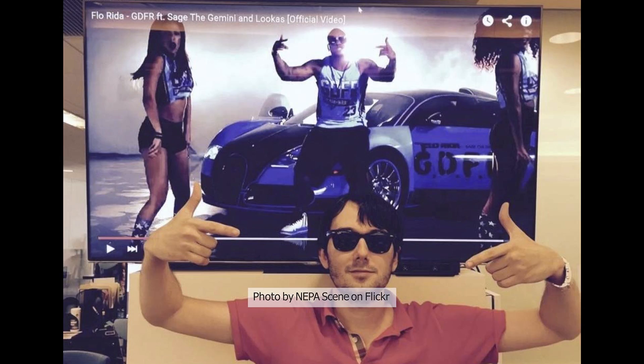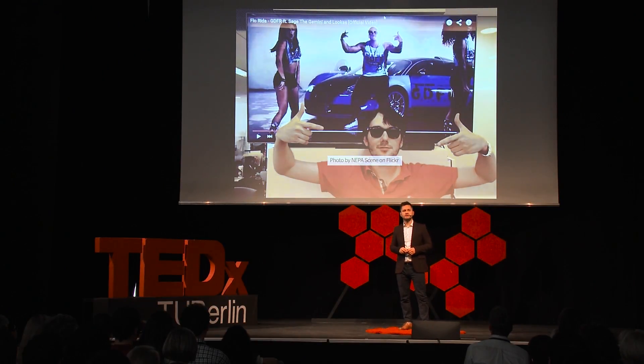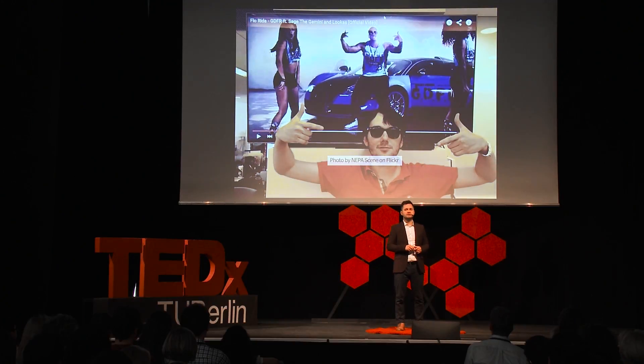Meet Martin Shkreli — a trader and entrepreneur who, a few years ago, bought a pharmaceutical company and increased the price of a drug for treating cancer from $13 per pill to $750. That's how monopolies work: you create a monopoly, there's no competition, and they can do whatever they want with the price. That's why you're on Facebook — you have no other option. That's why we all use Google — we have no other option.